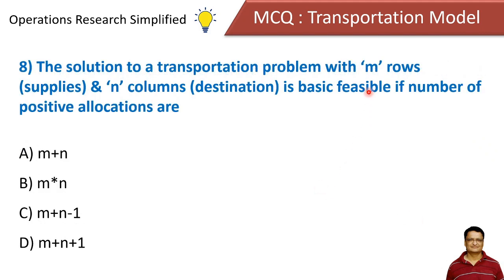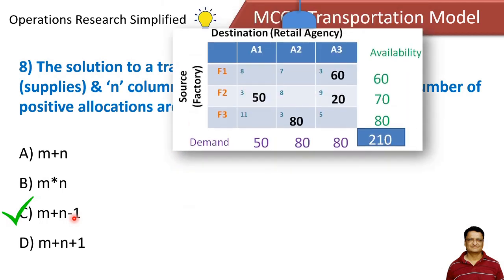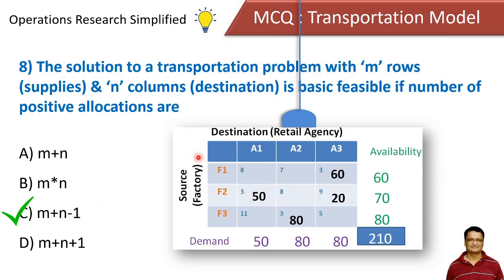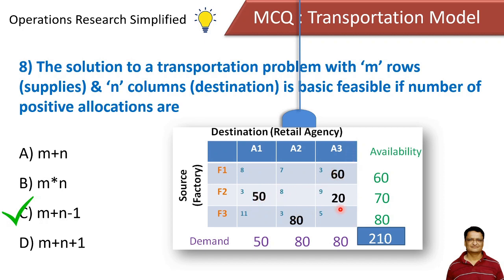The solution to a transportation problem with m rows (supplies) and n columns (destinations) is basic feasible if the number of positive allocations equals m+n, m×n, m+n−1, or m+n+1. The correct answer is m+n−1. For example, with 3 rows and 3 columns: 3+3−1=5 allocations are required. If there are only 4 allocations, it is not a basic feasible solution and is called a degenerate solution.